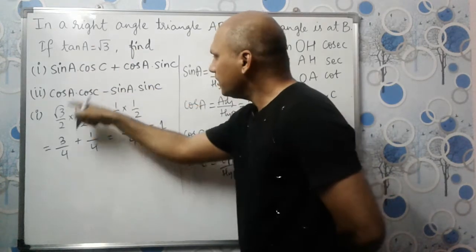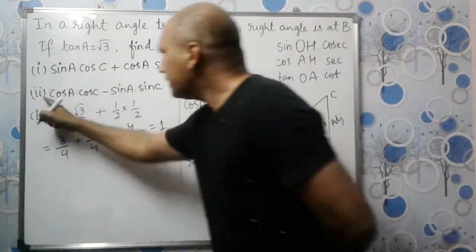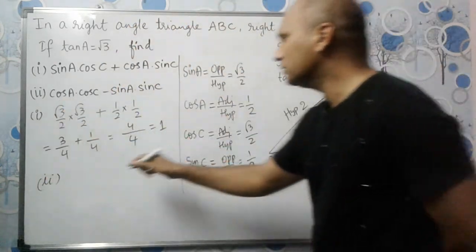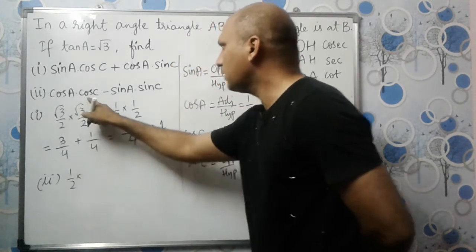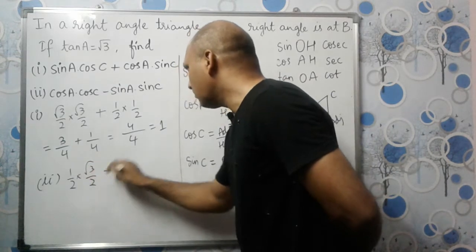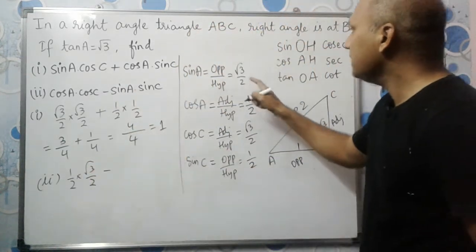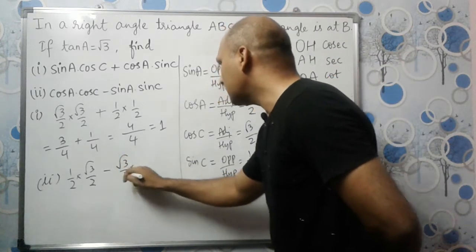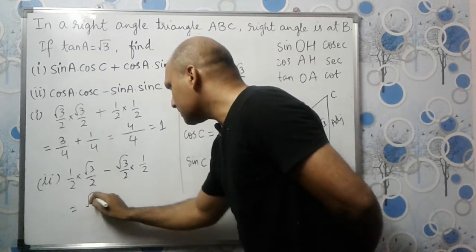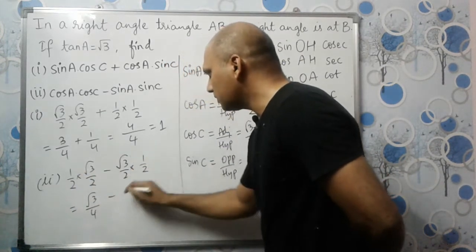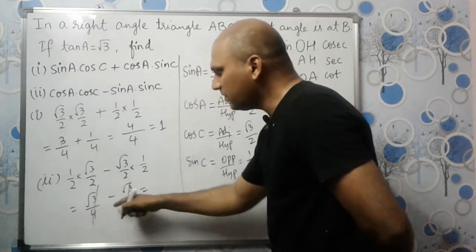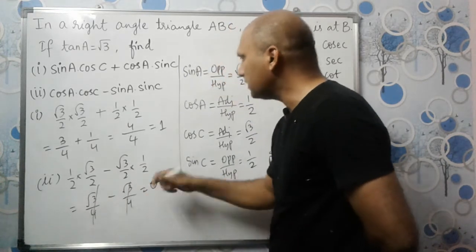For the second expression: cos A cos C minus sin A sin C equals (1/2)(√3/2) minus (√3/2)(1/2), which is root 3 over 4 minus root 3 over 4, which equals 0.